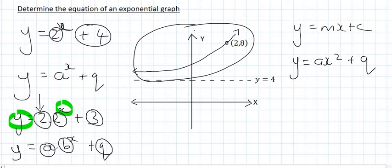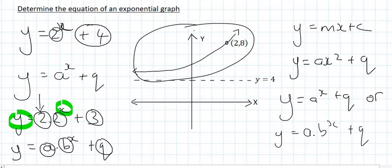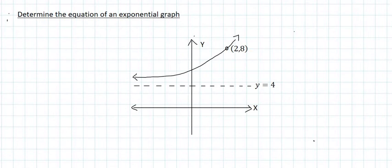And so when they give you this question in a test, they'll either say please determine the equation of this exponential graph. And then they'll say in the form y equals a^x plus q, then you know it's that one. Or they will use y equals a times b to the power of x plus q. So don't worry about that, you're not going to know which one it is, but they'll have to specify that in the question.